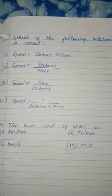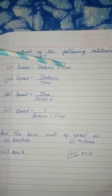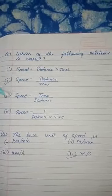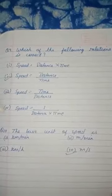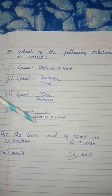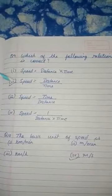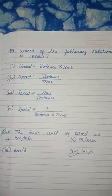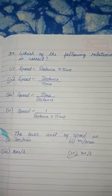Question number 9: Which of the following relations is correct? First, speed equals distance multiplied by time. Second, speed equals distance upon time. Third, speed equals time upon distance. Fourth, speed equals 1 upon distance into time. The correct option is: speed equals distance upon time.